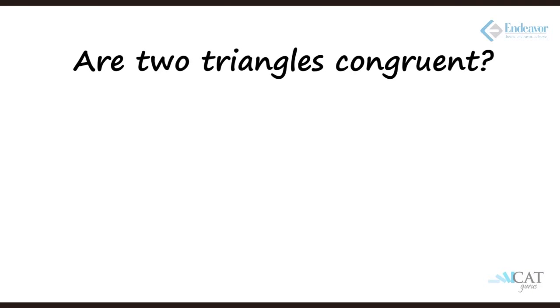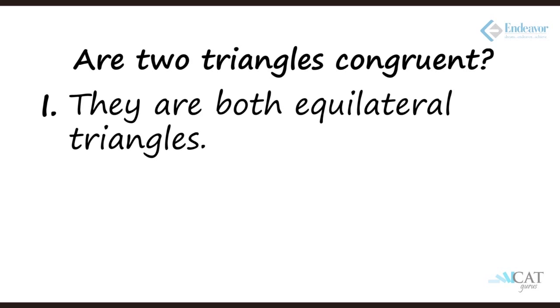Let's look at another question: are two triangles congruent? Congruency means the two triangles are exactly the same — same shape and same size. Statement one says they are both equilateral triangles. All equilateral triangles have the same angles, so they are similar, but congruent? We cannot say that with 100% confidence — they may be, but we cannot be sure.